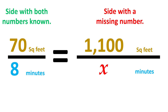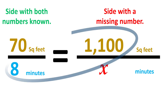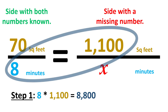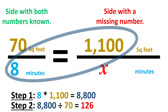Now we're ready to solve the problem. In the first step, we cross-multiply the two numbers diagonally across from each other — in this case, 8 and 1,100 — to get 8,800. In the second step, we divide the new product of 8,800 by the other number, 70. That gives 126 minutes, which is just over 2 hours. This example shows us that the missing value X can be above or below the division bar.